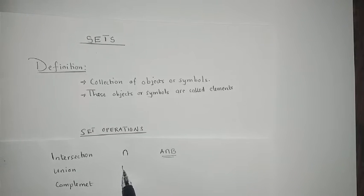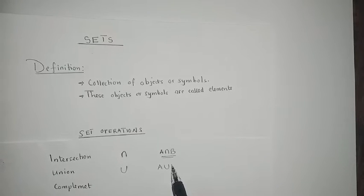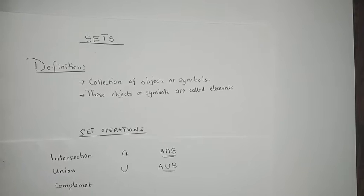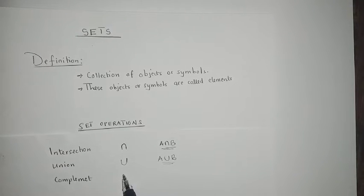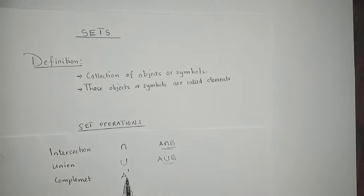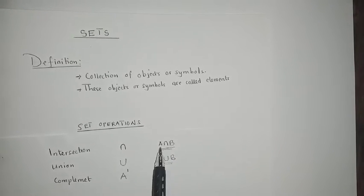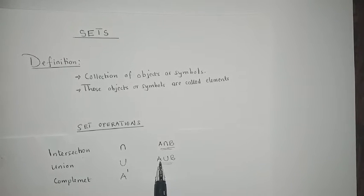Union looks like the intersection symbol but upside down. When you want to write A union B, this is how you write it. Complement — let's say A complement — means what is not in A, what is outside A. For intersection: what is common in A and B. For union: everything in A and in B, not repeated. If you have 1 in A and 1 in B, you only write it once.